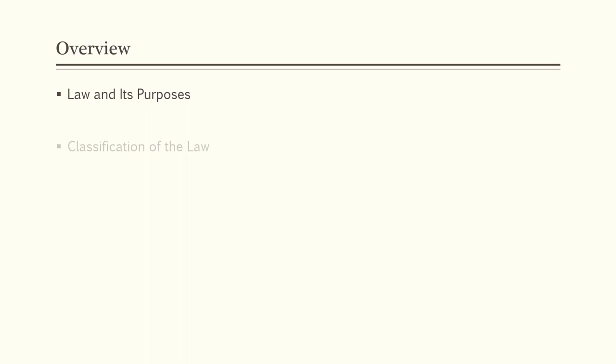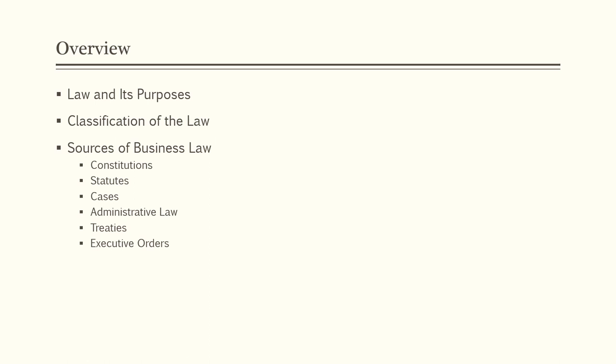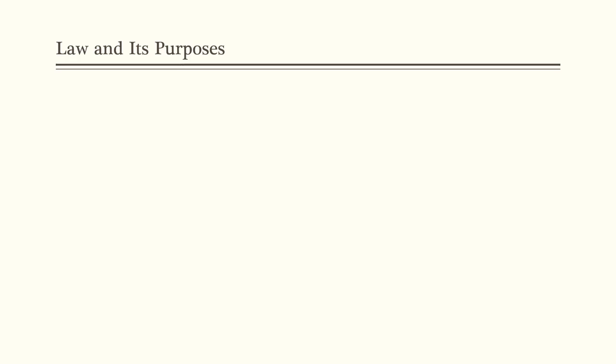In this first chapter, we're going to cover the law and its purposes, classification of the law, the sources of business law — constitutions, statutes, cases, administrative law, treaties, and executive orders. We will also cover the schools of legal interpretation and legal thought, and we will finish up with global and comparative law.